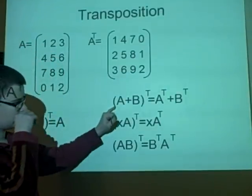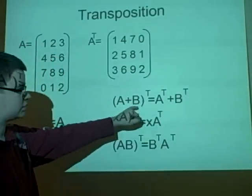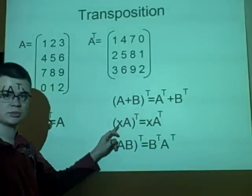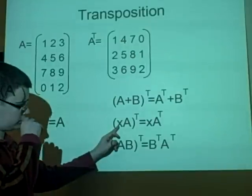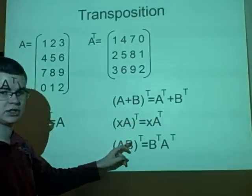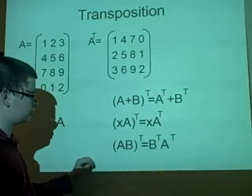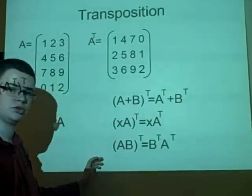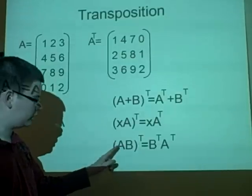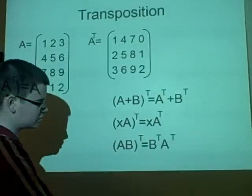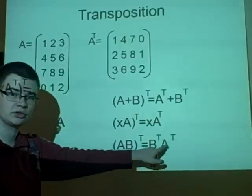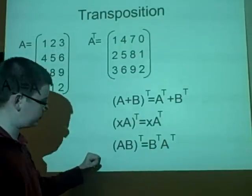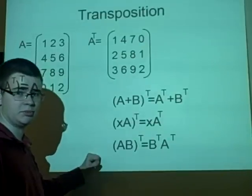Also we want to know that (A+B)^T is the same as A^T plus B^T, and x times A transposed is the same as (xA)^T. And also the last one is (AB)^T is the same as B^T times A^T, and this order makes a difference because as we said AB is not necessarily the same as BA.